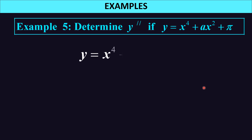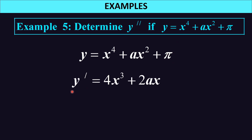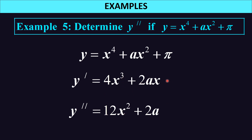Let's look at our fifth example: find the second derivative of x⁴ plus ax² plus pi. Note that pi is a constant. First derivative y prime equals 4x³ plus 2ax — pi differentiates to 0. Second derivative: 4x³ gives 12x² and 2ax gives 2a. So the second derivative is 12x² plus 2a.